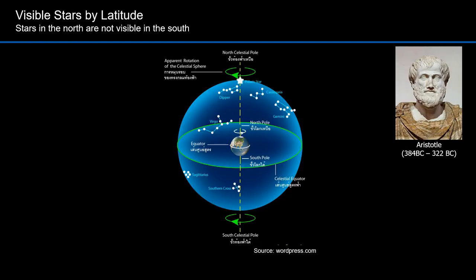Aristotle observed that different stars are visible at different latitudes at the same time of the year. Aristotle wrote: 'There are stars seen in Egypt and Cyprus which are not seen in the northerly regions.' This could only happen on a curved surface. You can see a depiction of the Southern Cross at southern latitudes and the Big Dipper at northern latitudes. You can't see the Big Dipper from the southern latitudes, and likewise, you can't see the Southern Cross from the northern latitudes.